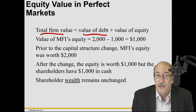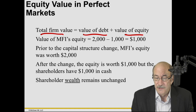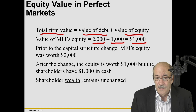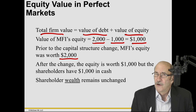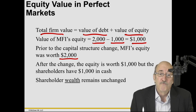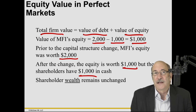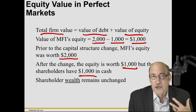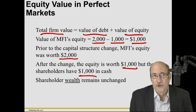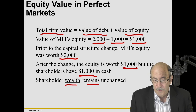Total firm value is simply the value of the debt plus the value of the equity. The value of MFI's equity is the value of the original firm minus the $1,000 of debt — so $1,000. Prior to the capital change, MFI's equity was worth $2,000. Have shareholders lost value? No, not at all. Because they still have equity worth $1,000 and now they also have $1,000 in cash in their pockets. They could buy more shares of a similarly risky company. Shareholder wealth remains unchanged — a very important result.